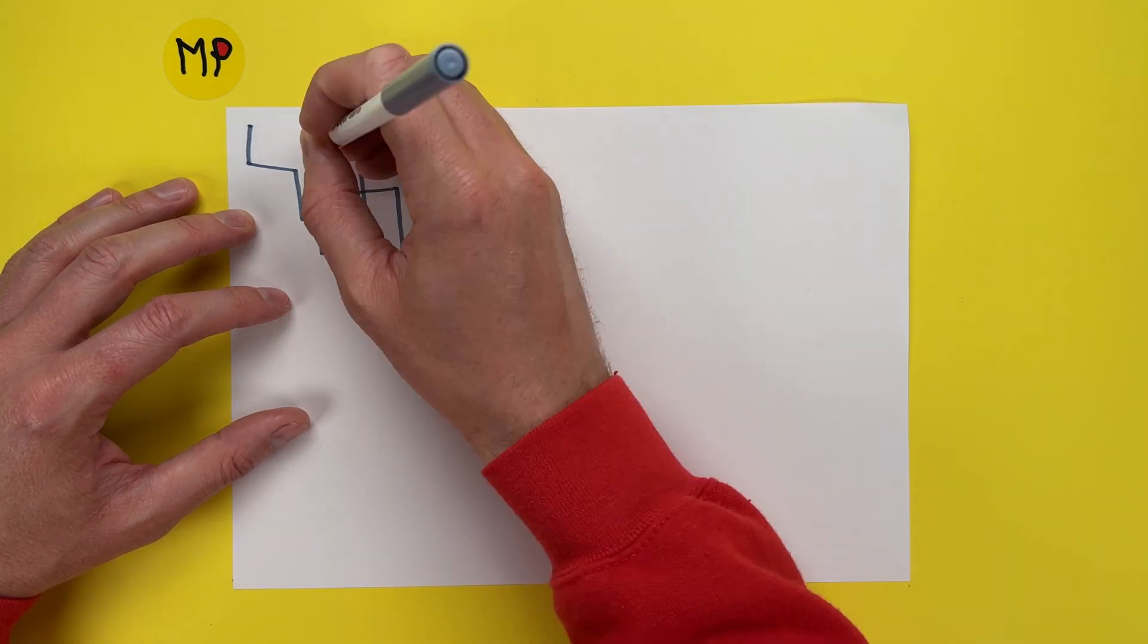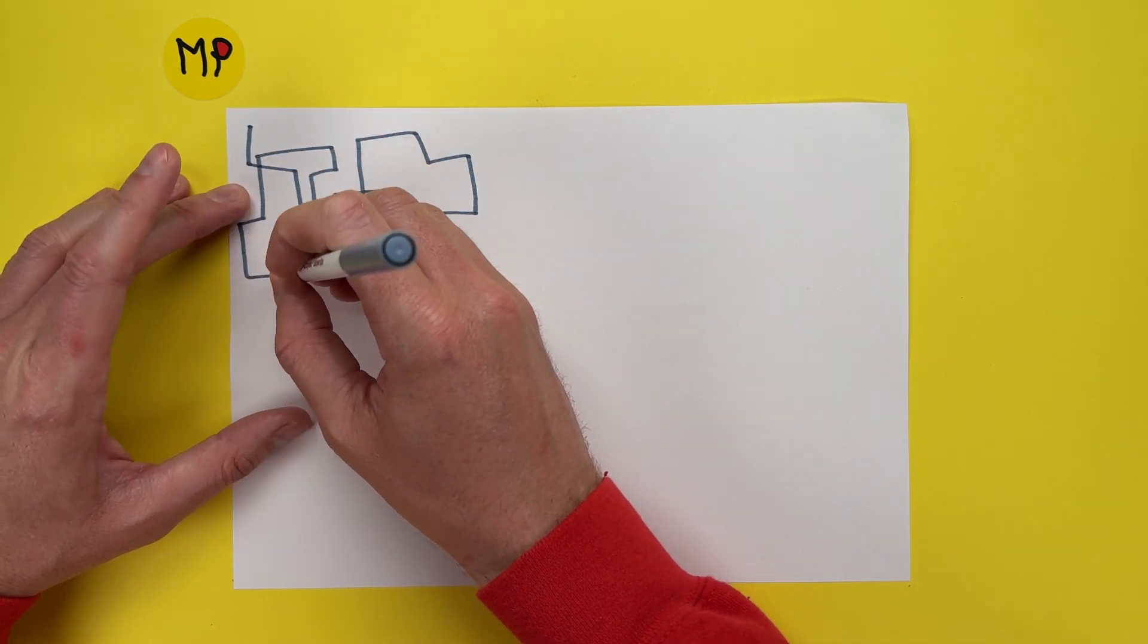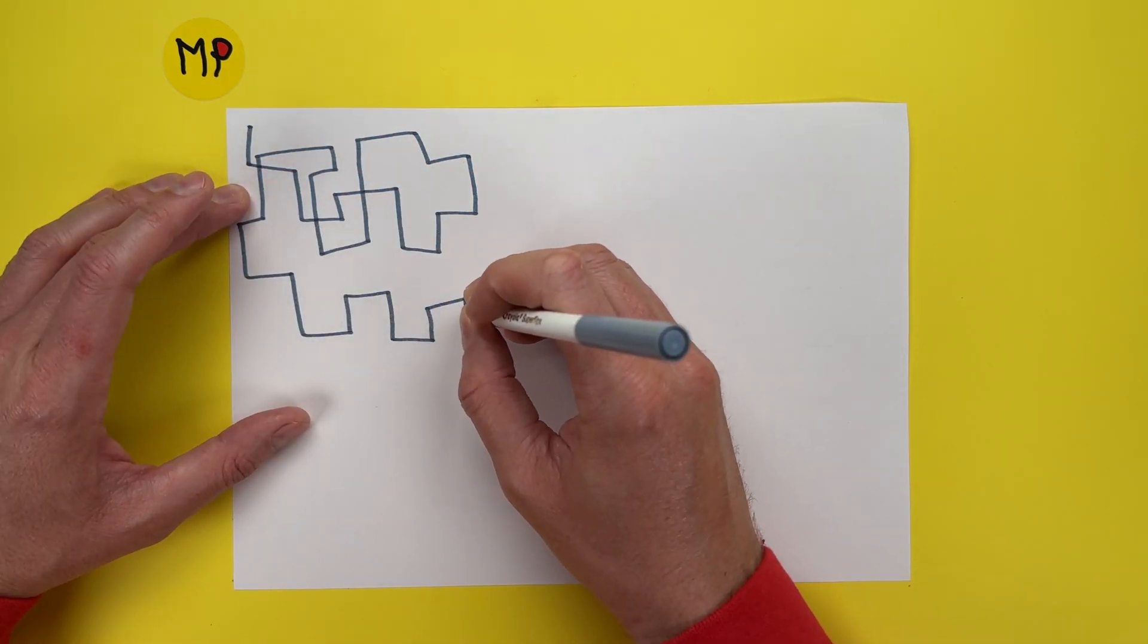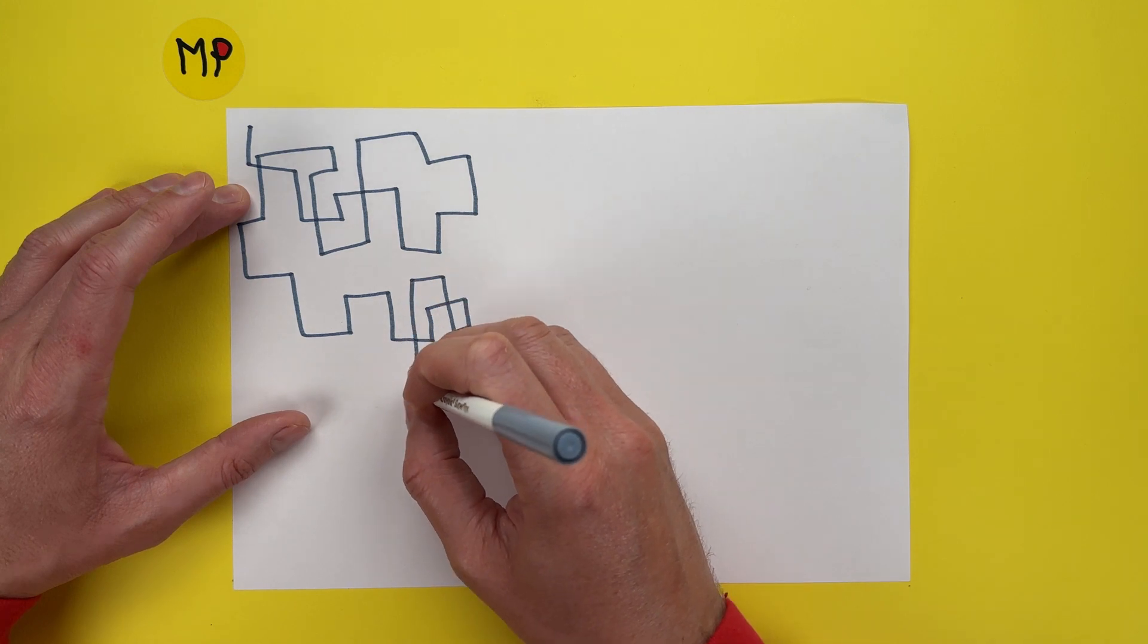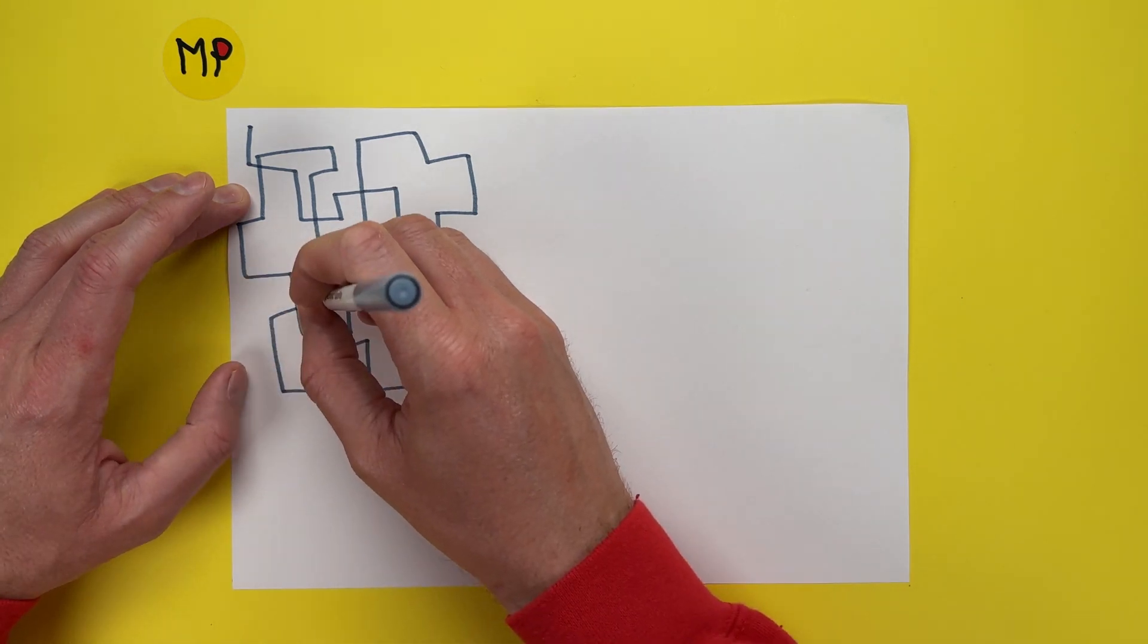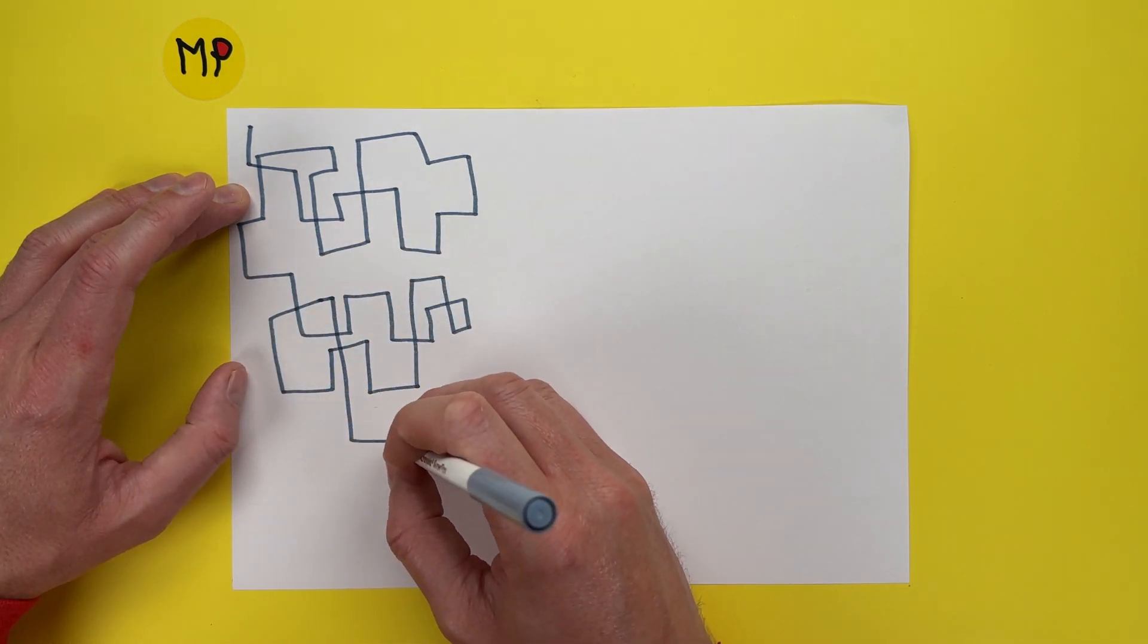Block shape in all sorts of directions overlapping some of the blocks already. Now you can take your pen off the paper if you want to do so.